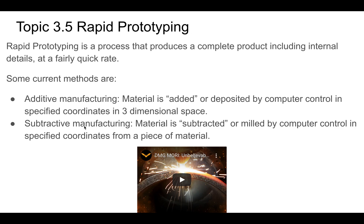Subtractive manufacturing means you're taking away material, or milling it — the technical word is milling. This is also by computer control at specified coordinates in three-dimensional space, and you're taking material away. This can be anything from stone to wood to metal.